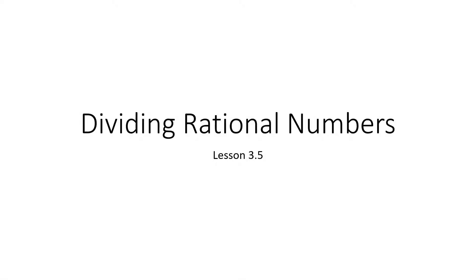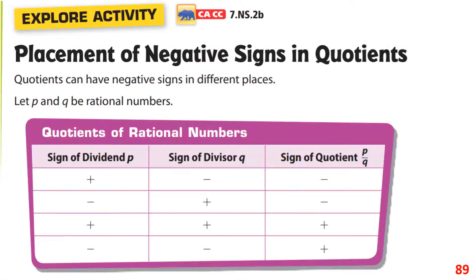You're going to learn about dividing rational numbers. In your book on page 89, you have rules like a positive divided by a positive, or a positive divided by a negative is a negative. For me, it comes down to the Xero triangle.